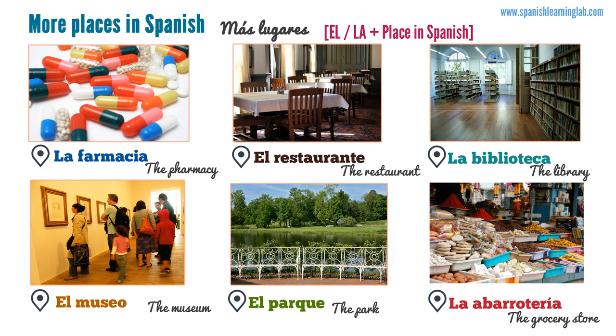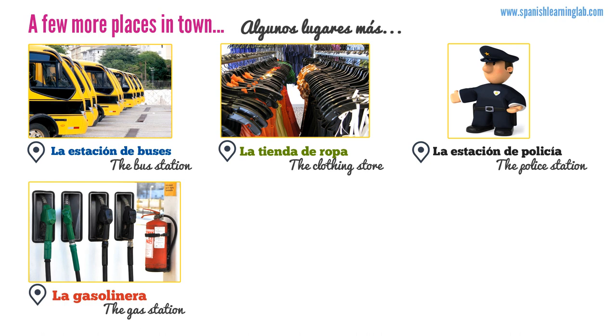Here is the third group of places in Spanish. They are: la estación de buses, la tienda de ropa, la estación de policía, la gasolinera, la iglesia, y la oficina de correo.